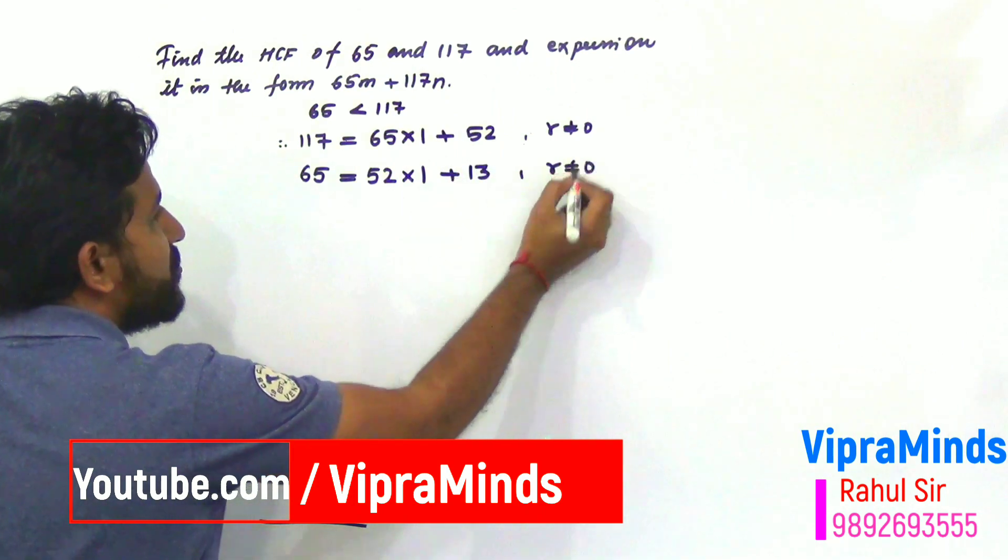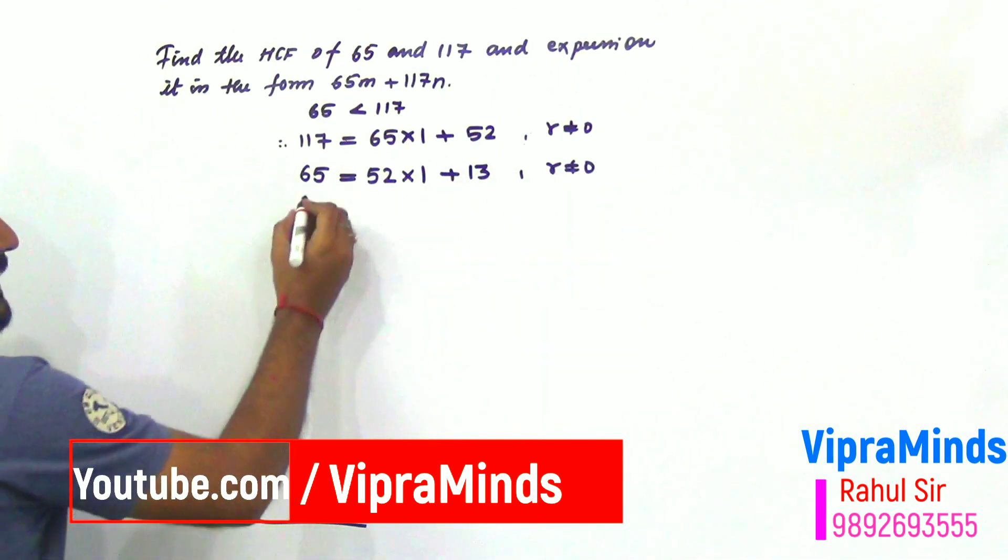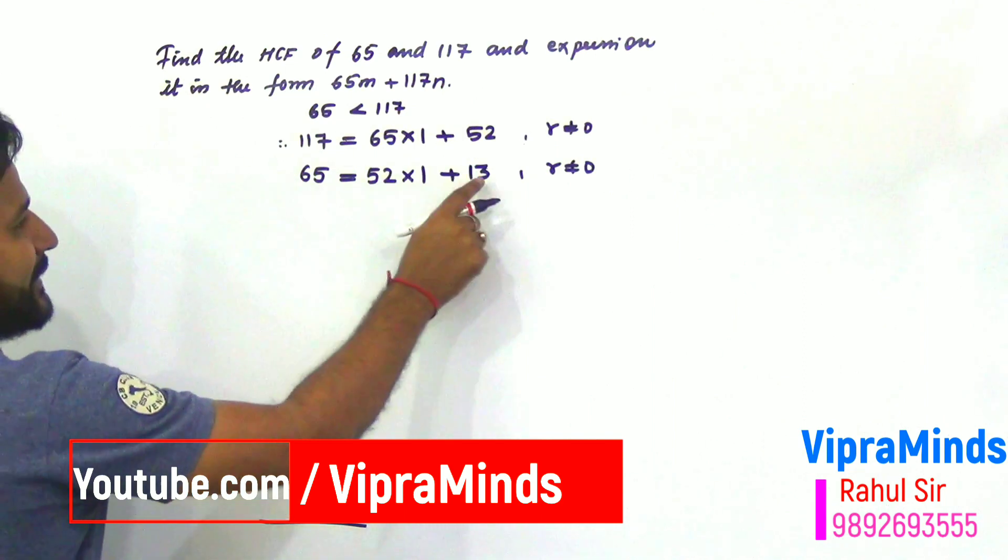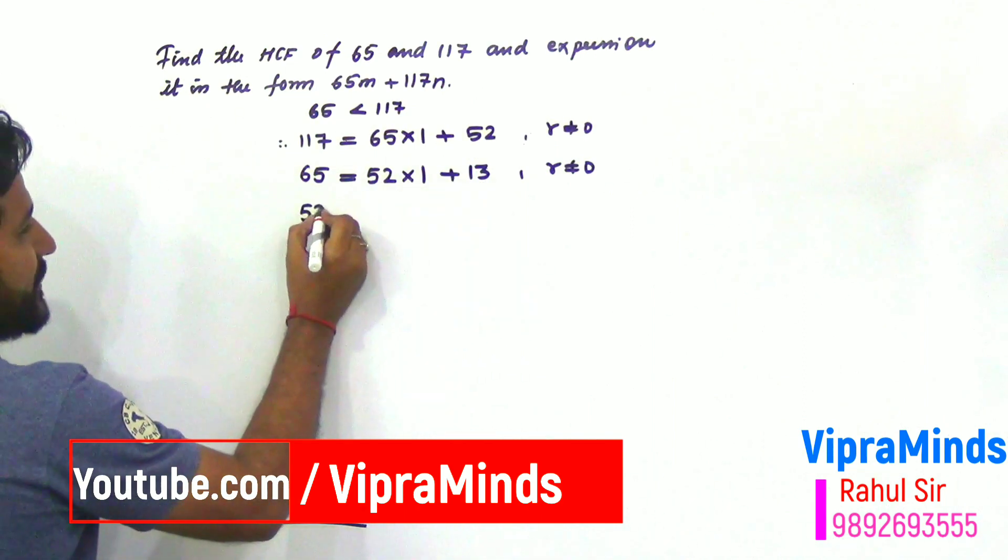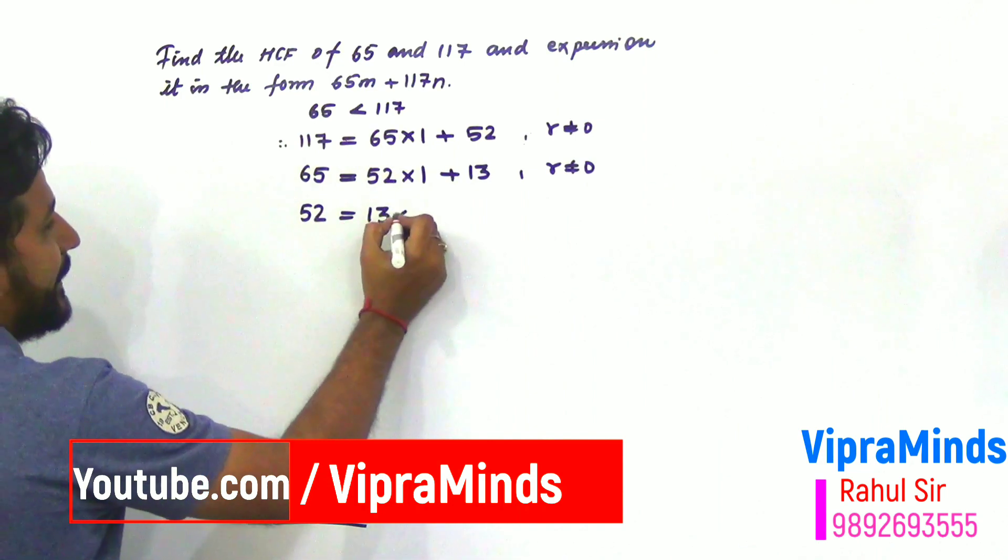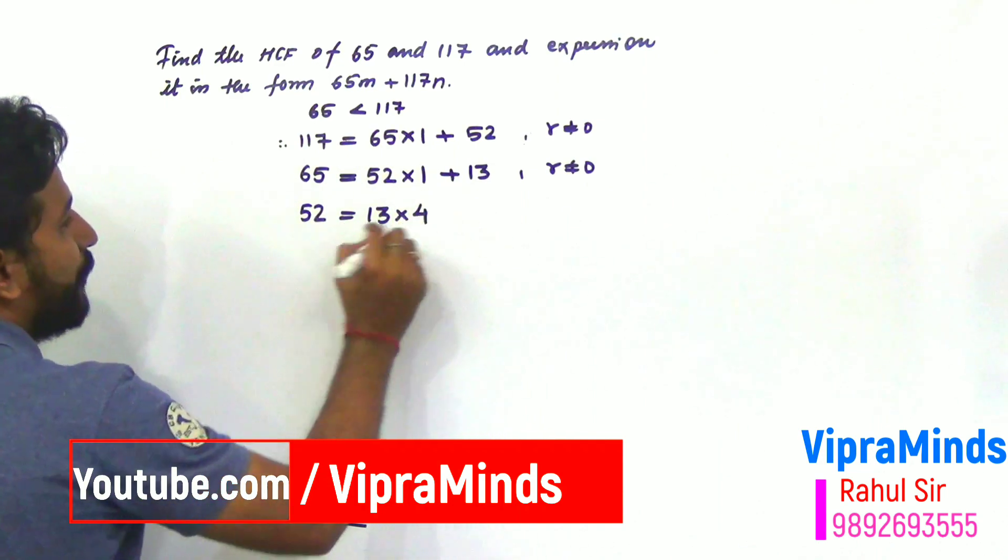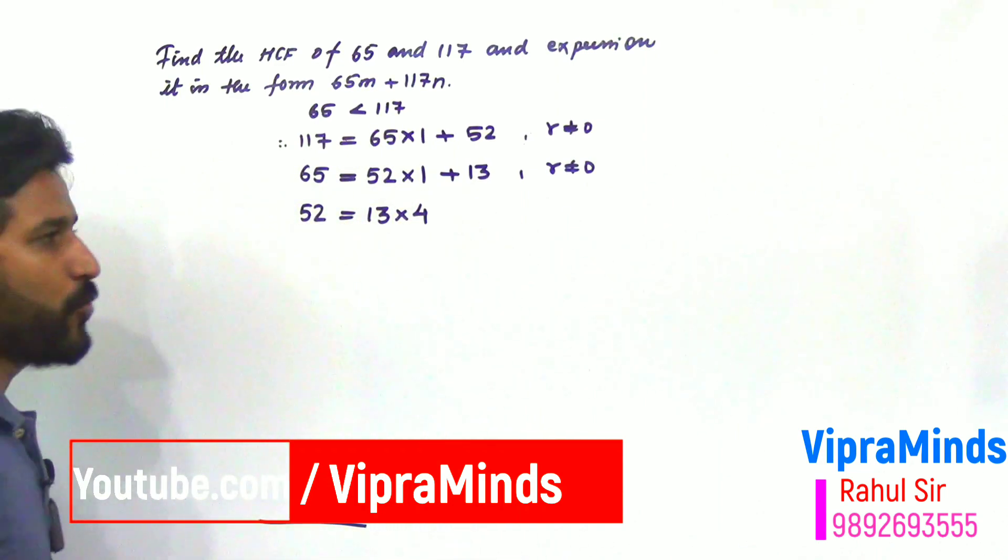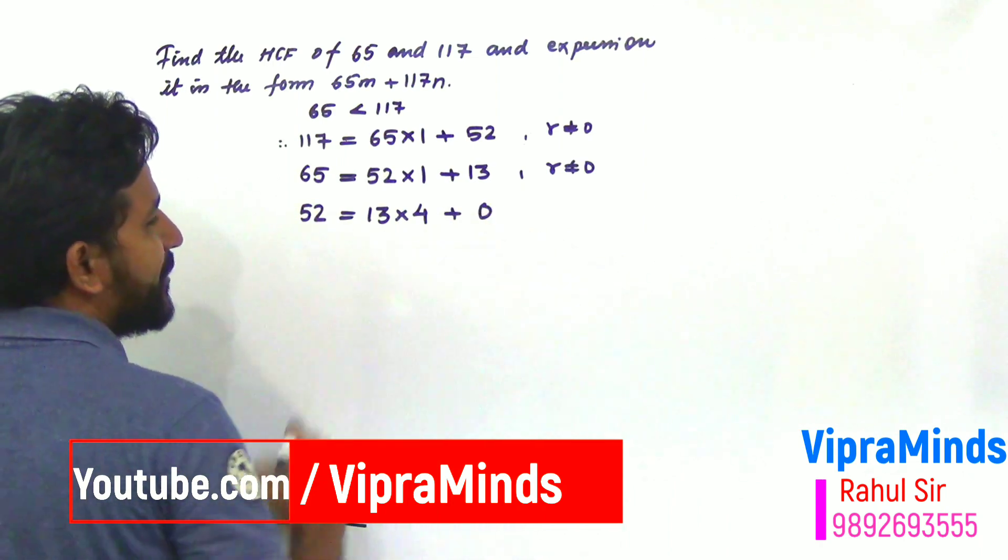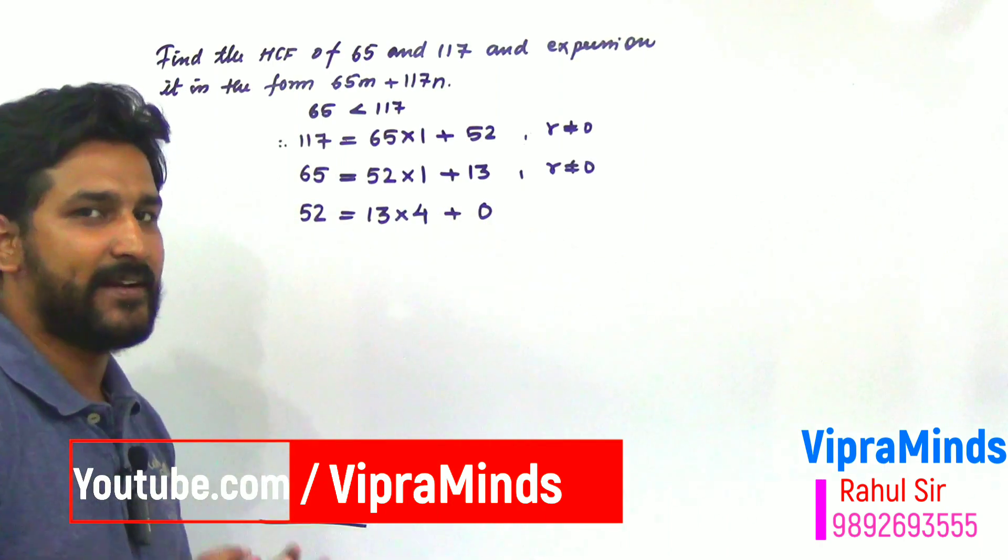Again, r is not equal to 0. So, next step will be 52 and 13. 52 is greater, so it is dividend equals to 13 into. Now, 13 into 4 is 52. The remainder here is 0. Finally we got the remainder as 0.